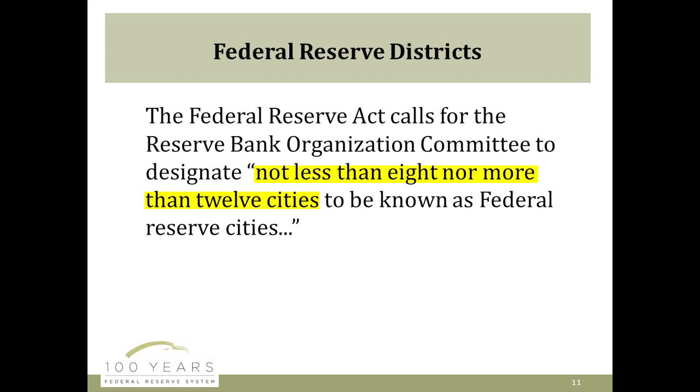Now let's turn to the Federal Reserve Districts — the private part, although we certainly have a public purpose. People who know a little bit about the Fed know that there are 12 reserve districts. The Act surprisingly doesn't say 12 — instead it says something between 8 and 12. The act refers to a reserve bank organization committee. At the time, this consisted of three people who in 1913 and 1914 had the job of figuring out whether it would be 8, 9, 10, 11, or 12 reserve banks, and where those reserve bank cities and districts would be divided.